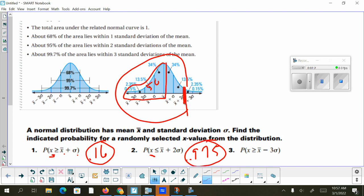Finally, on number three, let me erase all my marks again. We want the probability that our x value is greater than or equal to x̄ minus 3σ. So it's three deviations below the average, which is here.